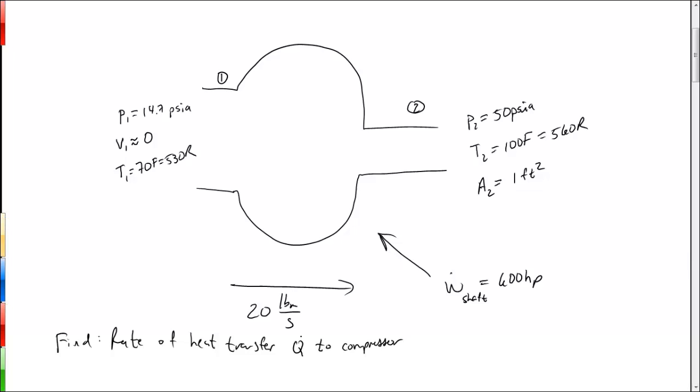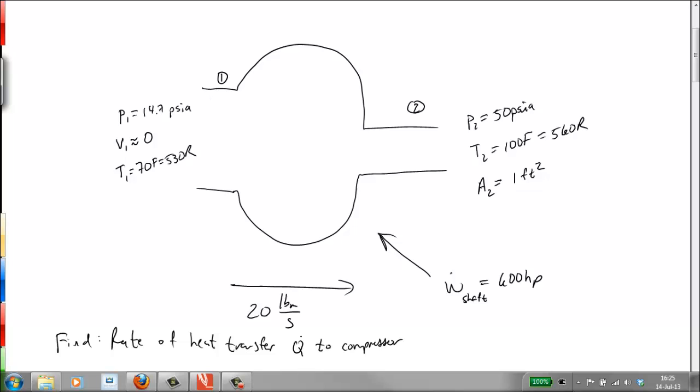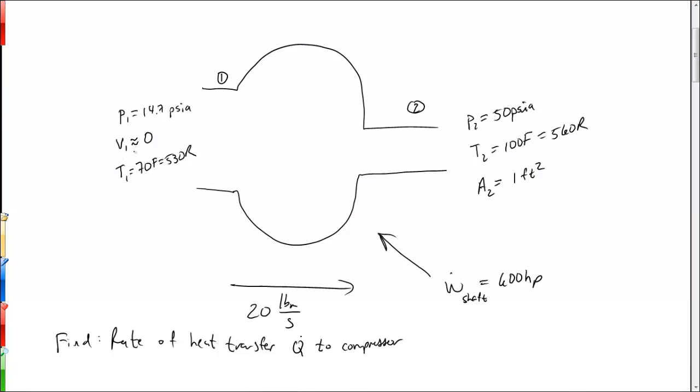So we're going to make a number of standard assumptions. We're going to assume steady flow inside the compressor, uniform flow across the inlet and the outlet, that the velocities are perpendicular to the control surface of the inlet and outlet. We're going to ignore changes in elevation, and we're going to ignore the kinetic energy or the velocity coming in at the inlet.